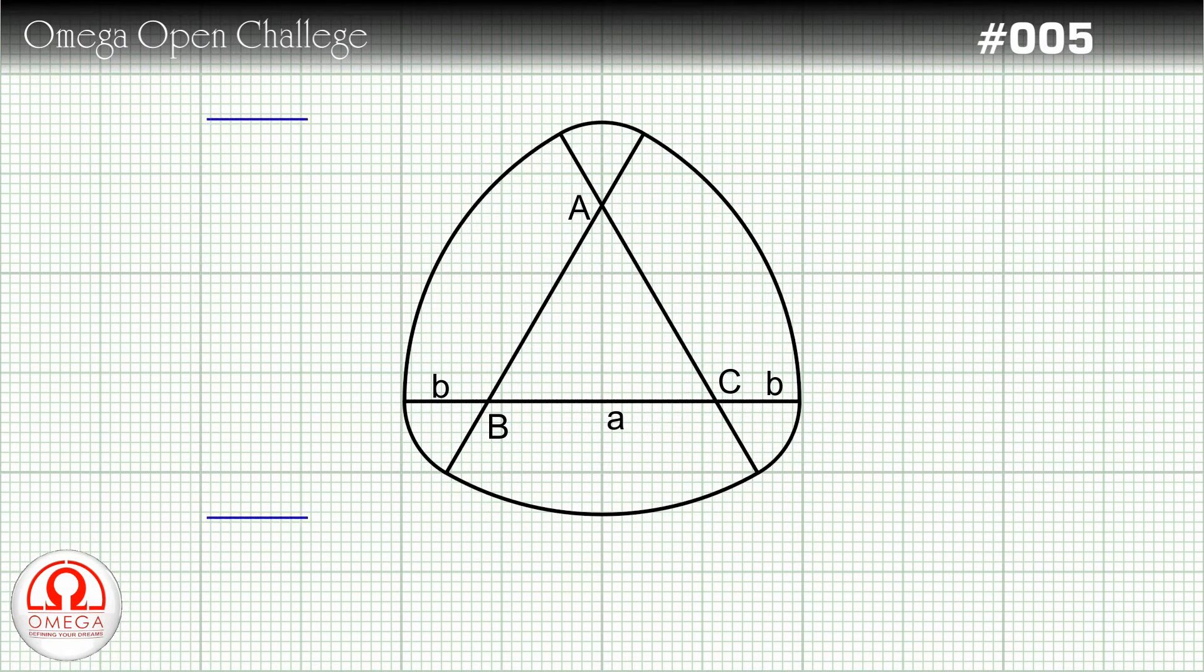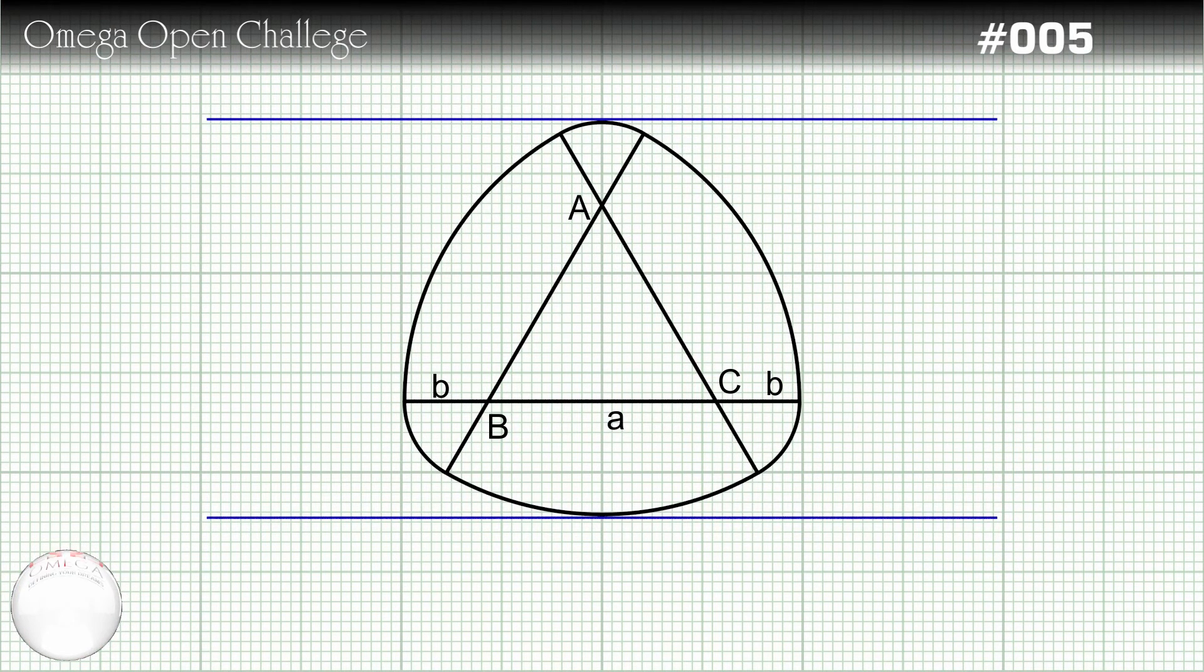Now draw a pair of parallel tangents. Since both tangents are tangents to the arc with center A, the perpendicular distance of the top tangent from A is equal to the radius of the arc, that is B.